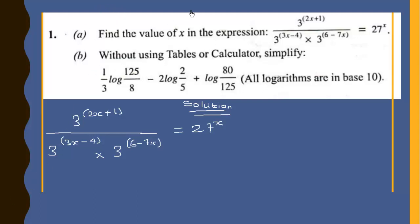Question 1a: Find the value of x in the expression 3 to the power 2x plus 1, all over 3 to the power 3x minus 4, times 3 to the power 6 minus 7x, equals 27 raised to the power x.